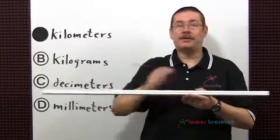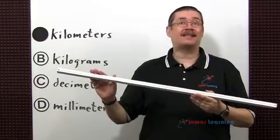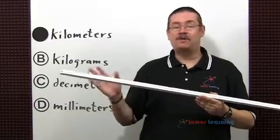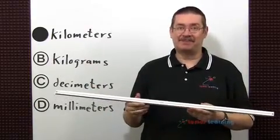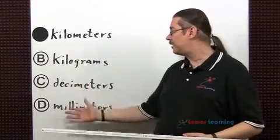If you multiply 1 meter by 1,000, that's 1 kilometer, which is perfect to measure the height of a mountain. Let's take a look at the other choices to see why they're incorrect.